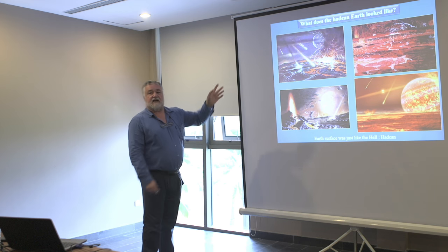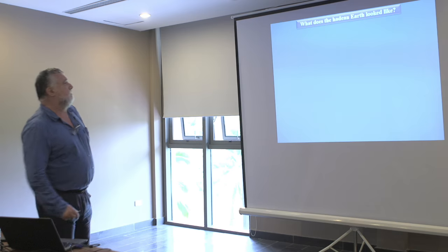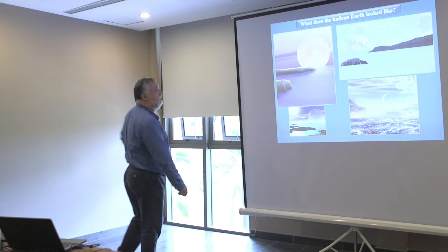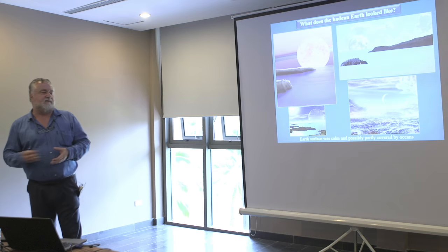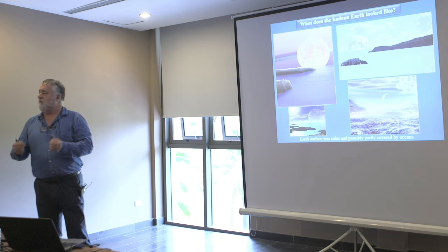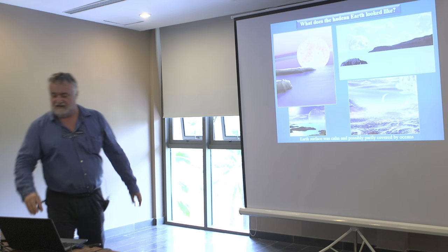Some people consider the Hadean period as some kind of inferno, with a lot of meteorites falling down, a magma ocean, and so on. And there is another school that considers that during this period, the Earth was cool, with oceans and continents. So we have two views of this period, and what I would like to discuss now is what we can think about this.